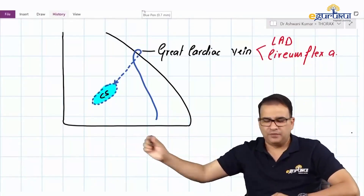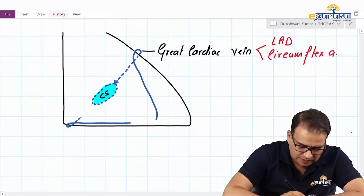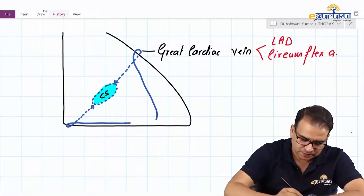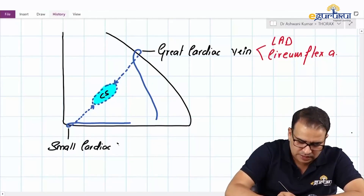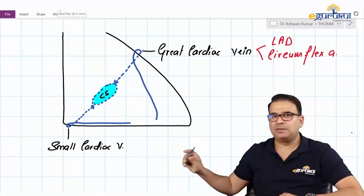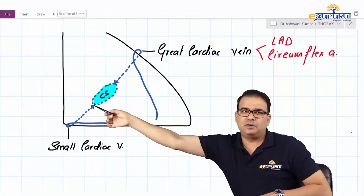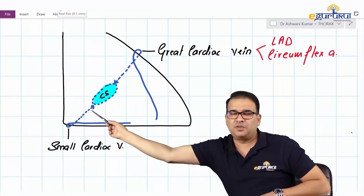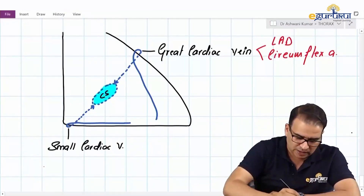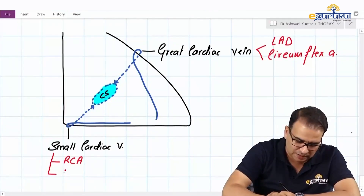Next, we have a vein running along the inferior border. It turns on the inferior border and drains into the right end of the coronary sinus — this is the small cardiac vein. The small cardiac vein is accompanied by the right marginal artery along the inferior border, and then on the posterior side it is accompanied by the main trunk of the right coronary artery.